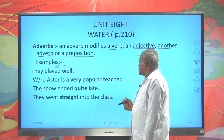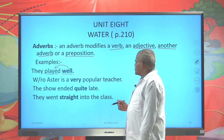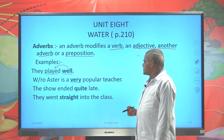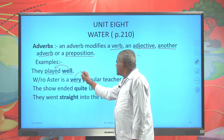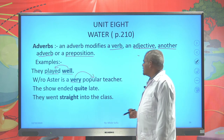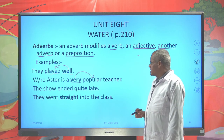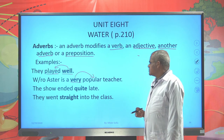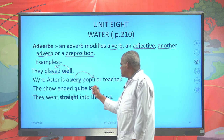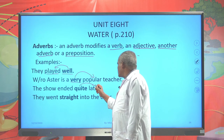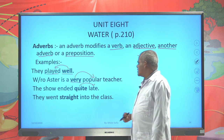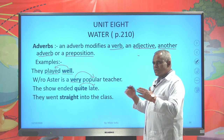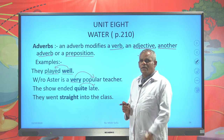'Withelaster is a very popular teacher.' Which one is the adverb? The word written in bold — that is, 'very.' It modifies the adjective 'popular.' And similarly: 'The show ended quite late.' Here, quite modifies late — an adverb modifying another adverb. These two are both adverbs. Quite modifies late, or late modifies quite. There are two adverbs here. This is one pattern of the sentence while using an adverb.